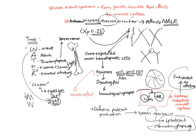With the thrombocytopenia, we call this ITP, which stands for immune or idiopathic thrombocytopenia. Idiopathic simply means we do not know the precise cause. There are certain clinical issues associated with this thrombocytopenia.